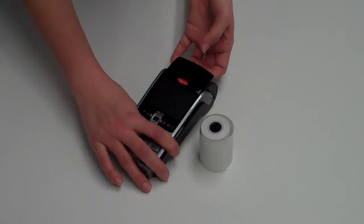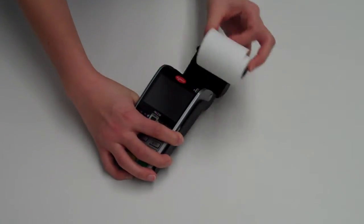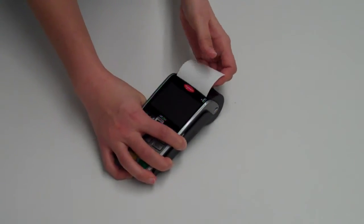To install the paper, open up the clamshell printer and drop the paper roll inside. Close the lid and you're done.